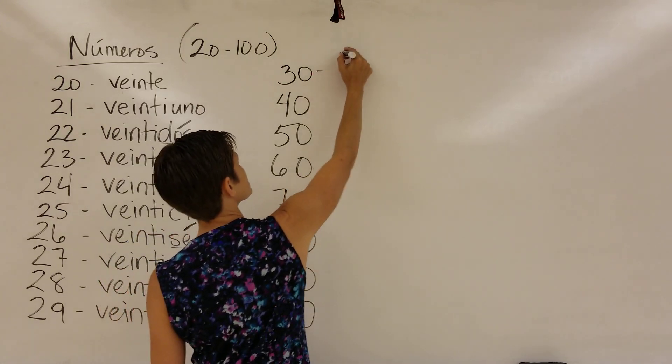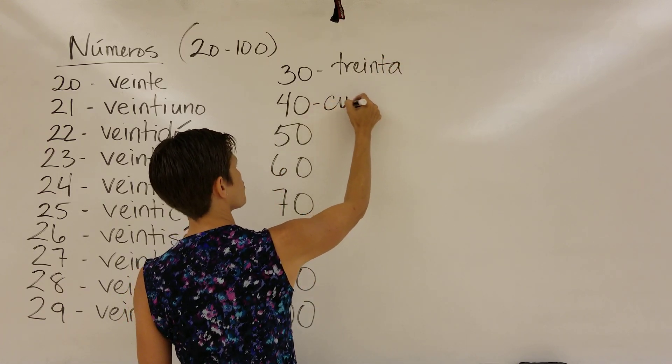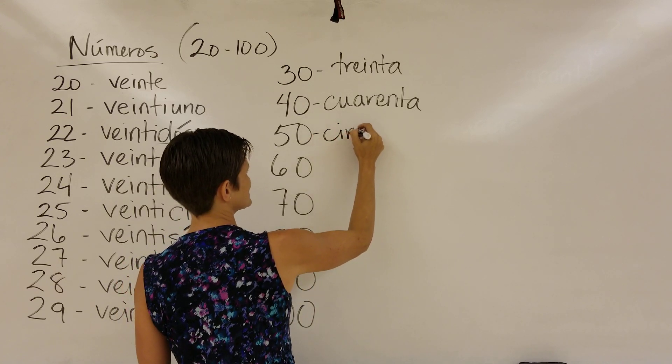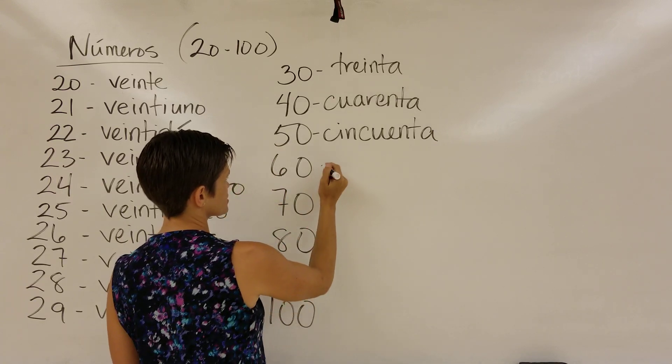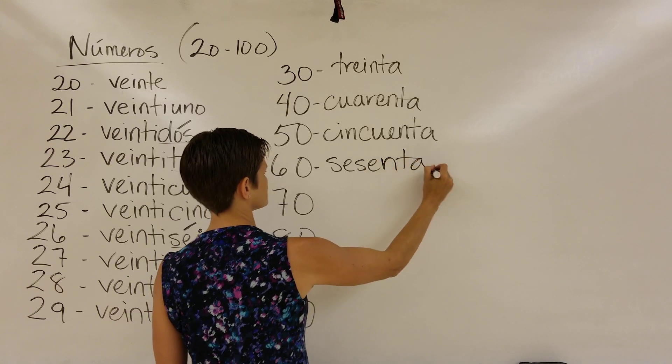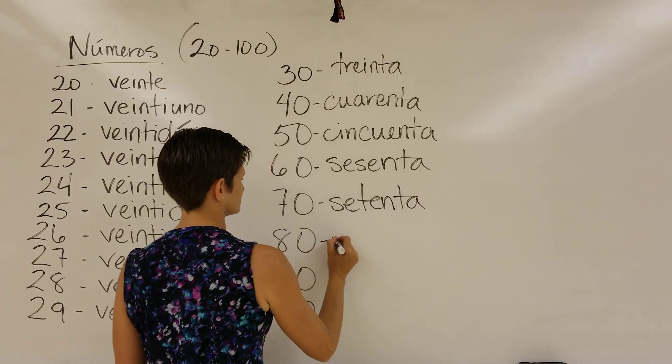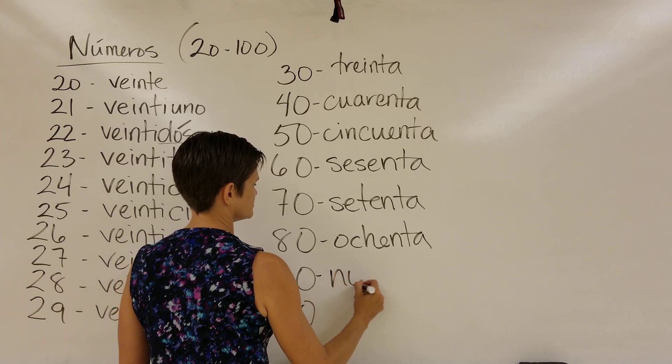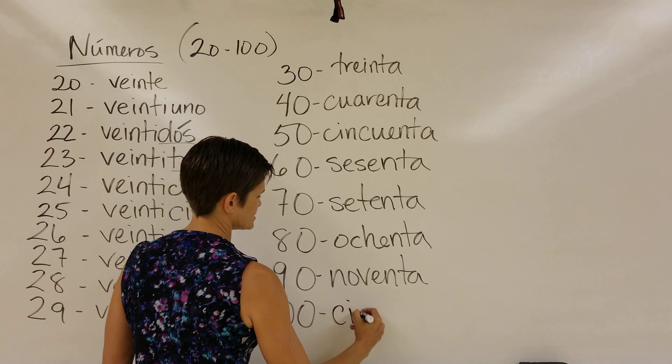All right, so 30 is treinta. Forty is cuarenta. Fifty is cincuenta. No Q in there, because the only number that has a Q is quince. Sesenta. Setenta. Ochenta. Noventa. And cien.